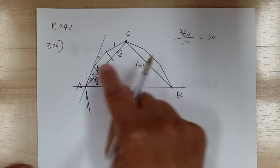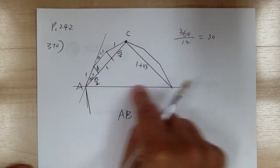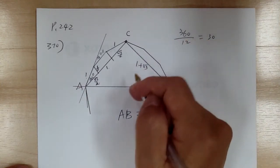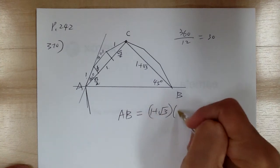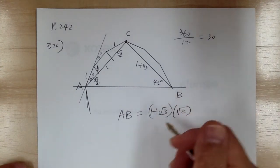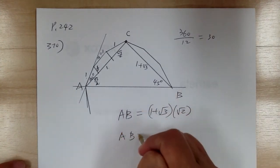Now you can use Pythagorean theorem, or you can just realize this is a 45-45-90 special triangle. So this would be square root of two times that, so it would be one plus square root of three times square root of two.